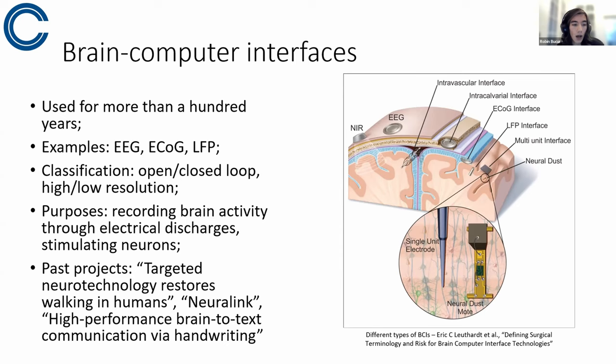do elicit some electrical discharges that we can pick up using electrodes and thereby have these recordings. Other purposes include stimulating neurons to achieve specific functions, and past projects in this area of notable mention are targeted neurotechnology restores working in humans, where researchers from Brown and other universities have worked on an electrode array that was implanted in patients that had the spine sectioned by an accident, of course, and this electrode array managed to restore the walking in those patients by reconnecting, basically, the brain to the legs, and they could push a button and just start moving and push it again and they would stop walking.